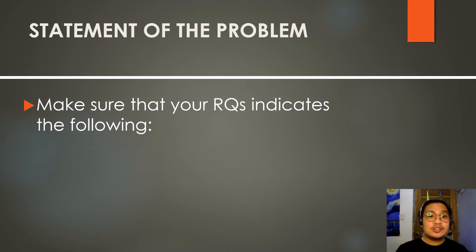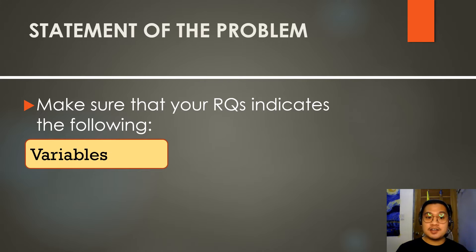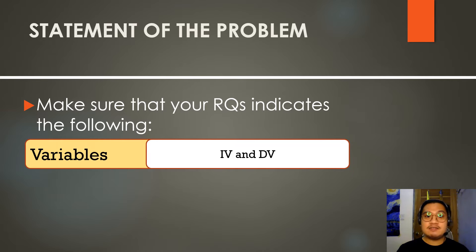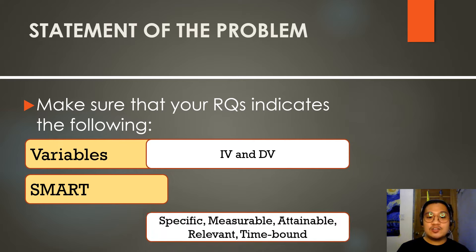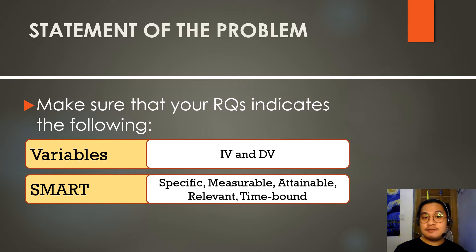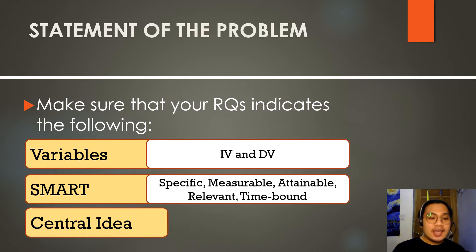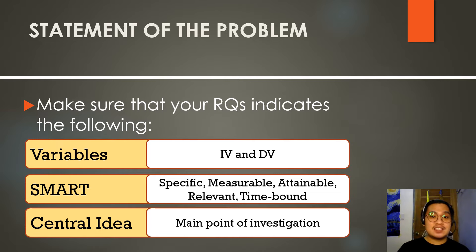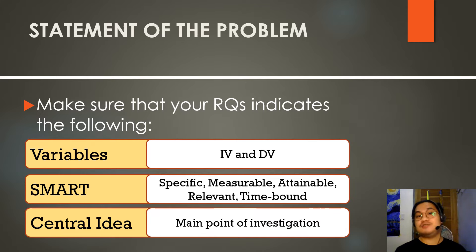What do you need to do in the research question? Remember the following concepts. First, regarding variables: you need to identify what is the IV (independent variable) and the DV (dependent variable). It is very important that your research question indicates both the IV and DV. The next aspect is SMART — specific, measurable, attainable, relevant, and time-bound. Make sure your research question follows these criteria. And of course, the central idea of the particular problem, which will be the main point of your investigation, also called the central question of your research paper.